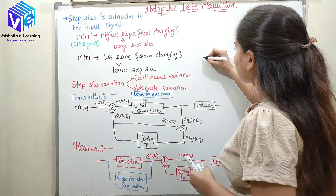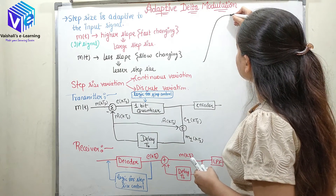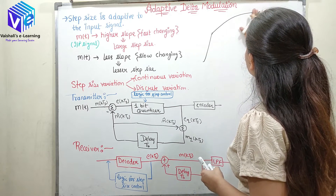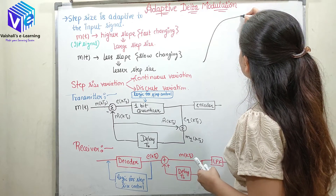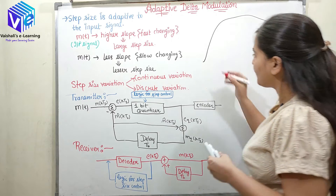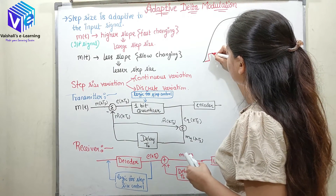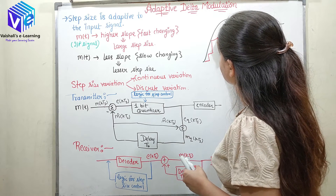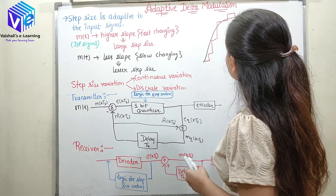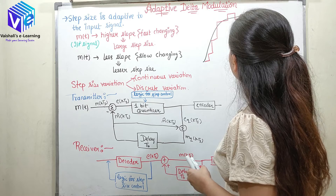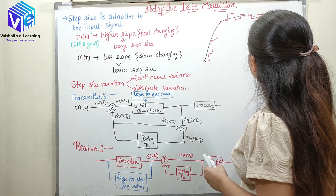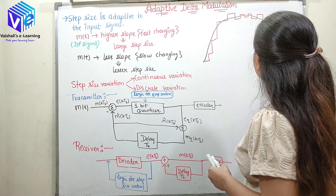Now if I draw the waveform — let's suppose we have the fast varying message signal, and then we have the slow. This is my message signal. Now if I draw the step size: here I will be having more step size, and here now I will be having lesser step size. Here step size will start decreasing because now the message starts decreasing. Whenever we have more slope of the message signal, we will be having more step size.